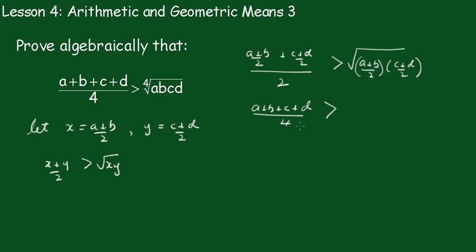Now in this part here, we know that (a+b)/2 is greater than the square root of ab, and we know that (c+d)/2 is greater than the square root of cd. Now if that's the case, then we know this must be greater than...